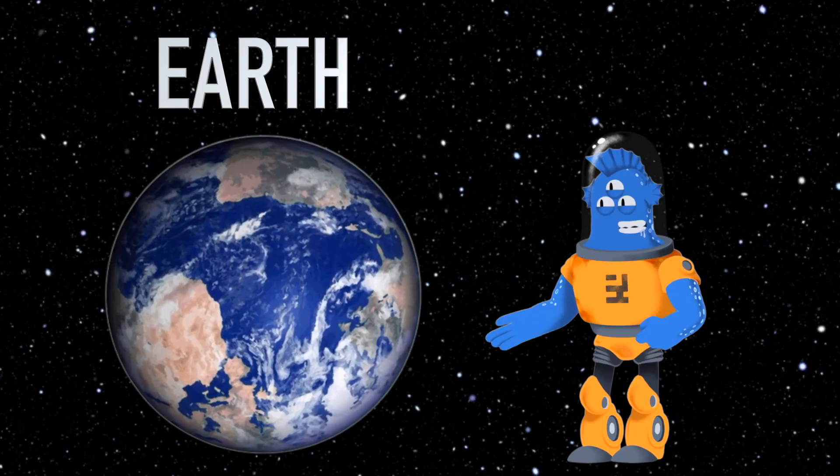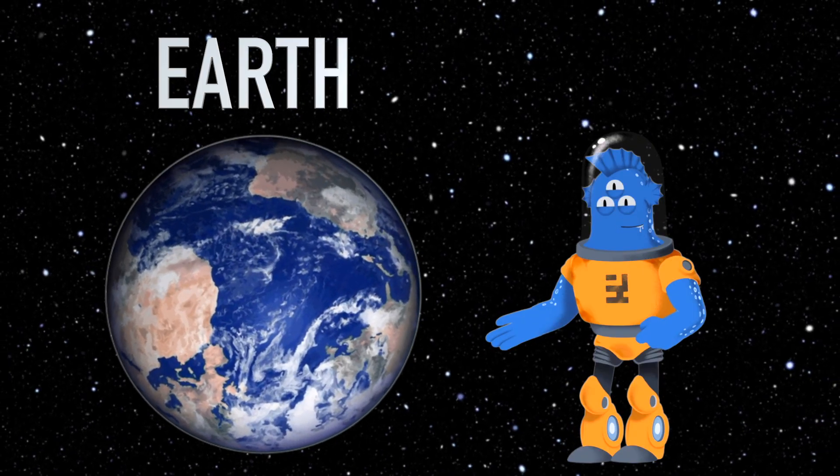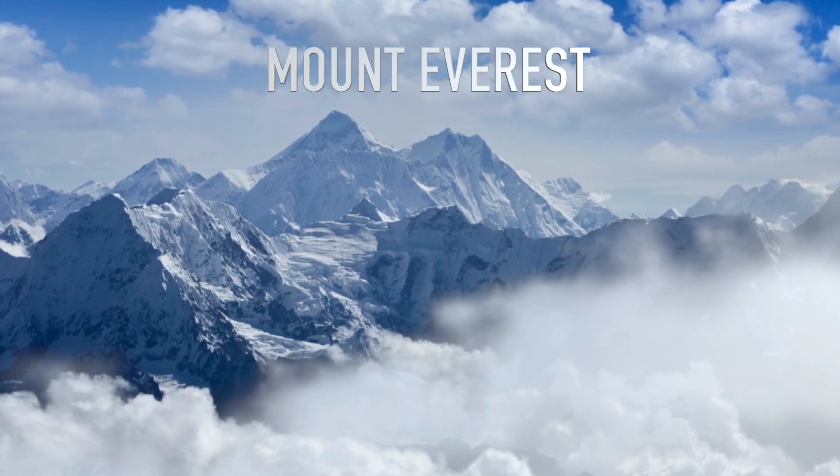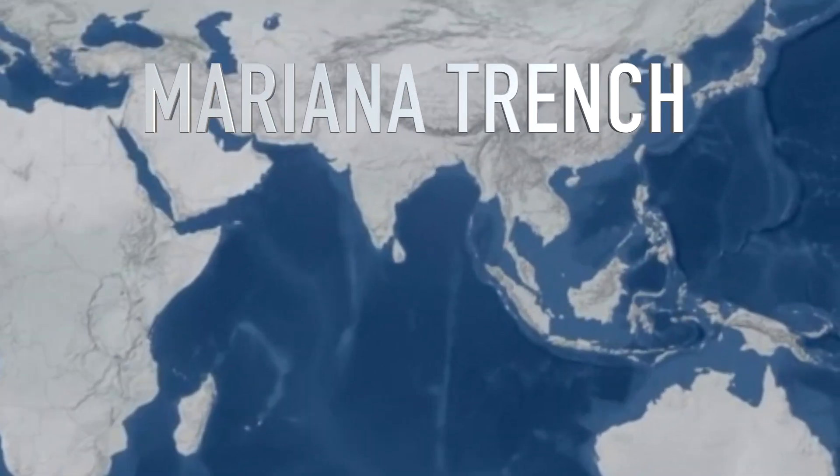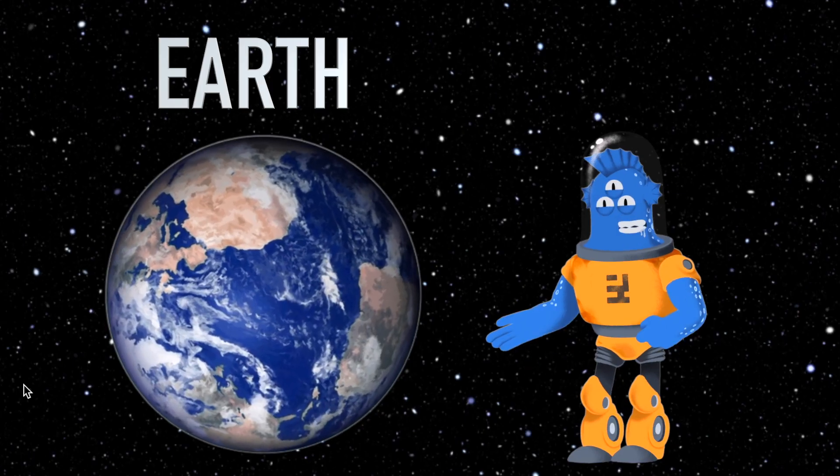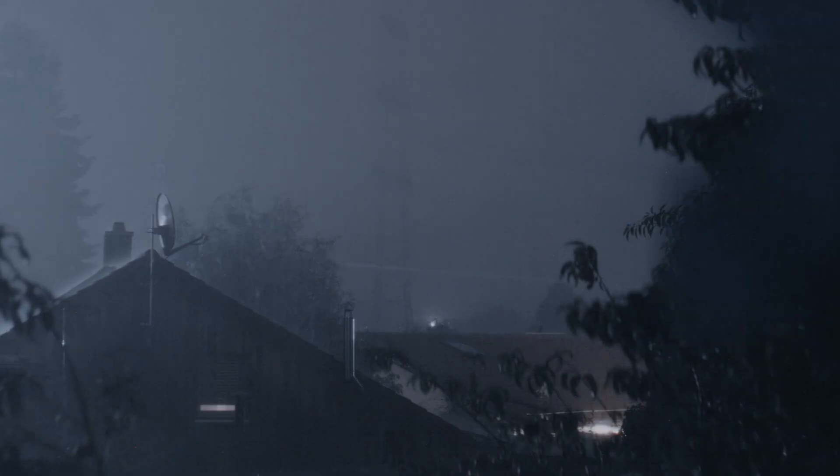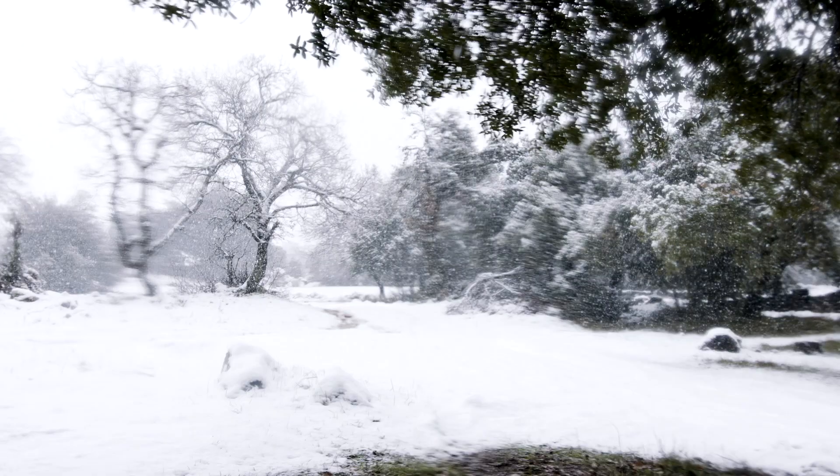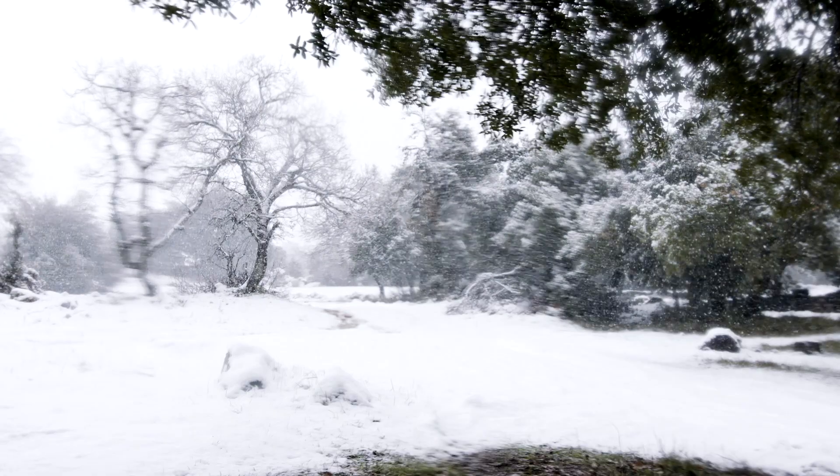Our planet has the highest mountain and the deepest trench. Mount Everest is the tallest mountain, and the Mariana Trench is the deepest part of our oceans. Talk about extremes. Earth has some awesome weather, like rain, snow and thunderstorms. It's like nature's own symphony, changing from day to day.